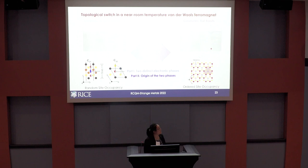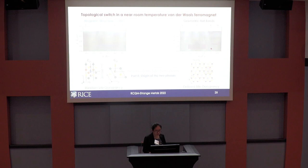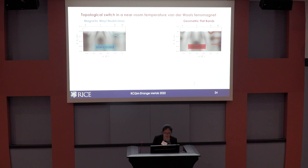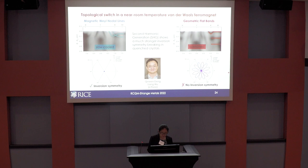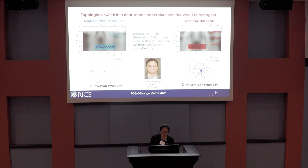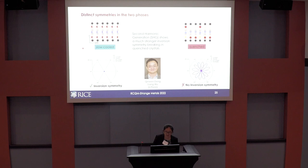Next, how do we understand the origin of this electronic structure dichotomy? We probed the symmetry of the two crystal types by reaching out to Liang Wu at UPenn to measure second harmonic generation. They see a very strong SHG signal for the quenched crystals but very few counts for the slow-cooled crystals. This means inversion symmetry is indeed broken in the quenched crystal and preserved in the slow-cooled crystal — consistent with our understanding of the iron-1 site ordering in the quenched crystal.